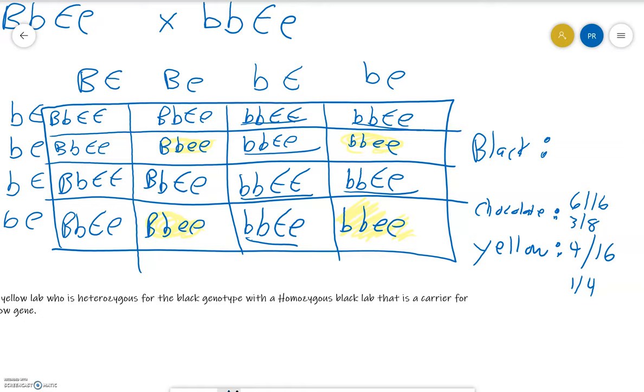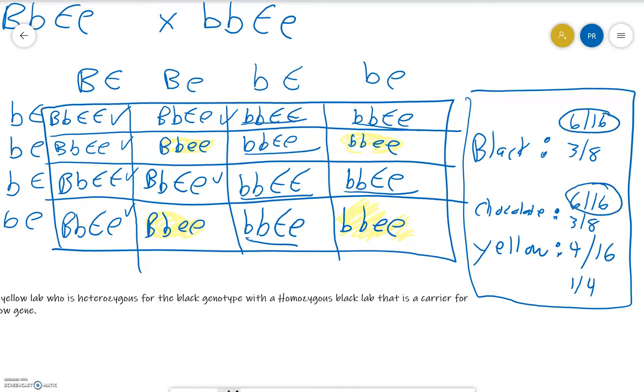To be a black lab, it should be whatever is left, but let's double check. We need at least one capital B and at least one capital E. So one, two, three, four, five, six out of 16, which is again three out of eight. Let's double check: six plus six is twelve, plus four is sixteen. I counted all the boxes. Those would be the chances if you were to cross those two dogs.